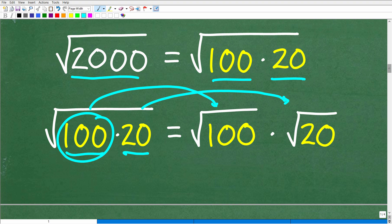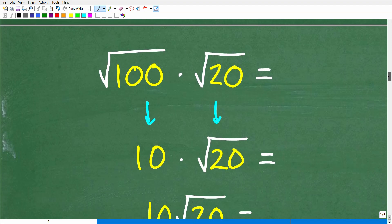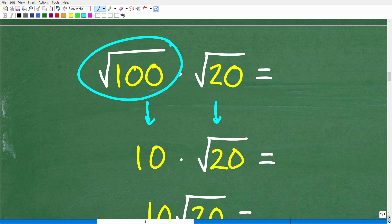So this is the square root of 100 times 20 is equal to the square root of 100 times the square root of 20. Okay, so this is very powerful because now we can take the square root of 100. Okay, the square root of 100, of course, is 10. So here, this leads to 10 times the square root of 20.